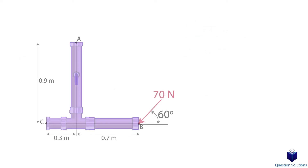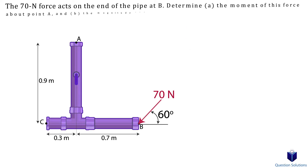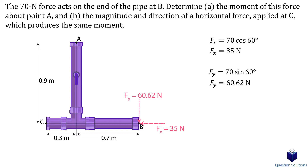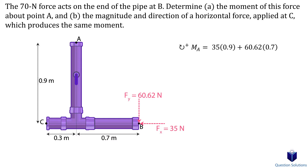Let's take a look at this problem, where we need to find the moment created about point A, and also find another force applied at point C to create the same moment. First, we will break the 70-newton force into its X and Y components. Assuming clockwise to be positive, the moment at A can be written as the force times the perpendicular distance — for the X component the perpendicular distance is 0.9 meters, and for the Y component it's 0.7 meters.